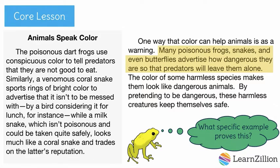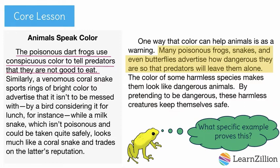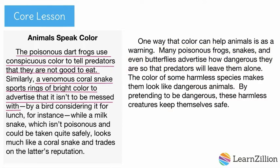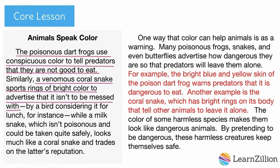I see an example here about the poison dart frog. This example helps prove that color can be a warning. Let's look for another example that helps prove our idea. On your practice sheet, underline a different example of an animal who has coloring which warns that it is dangerous. Pause the video now and press play when you are done. Another example of an animal with color warning it is dangerous is the banded coral snake. Let's revise this paragraph to include these examples. Now my reader can see exactly what I'm talking about.